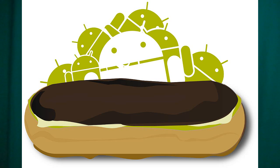Then came another Android operating system named Eclair, another sweet name. This happened in October 2009 and was named Android 2.0. So in the year 2009 itself there were four versions of the Android operating system.